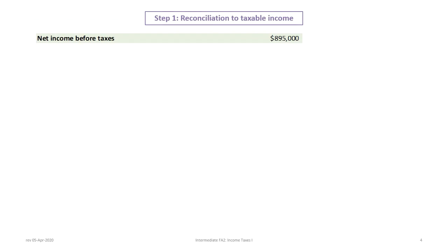Remember that permanent differences are those items that are neither tax deductible nor taxable when it comes to accounting calculations. We start with our net income for accounting purposes, which was $895,000, and then make adjustments for permanent differences.